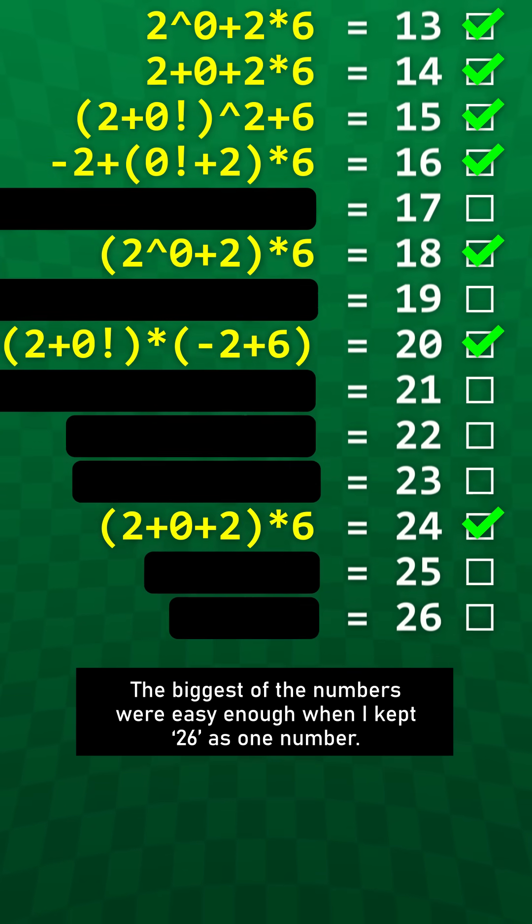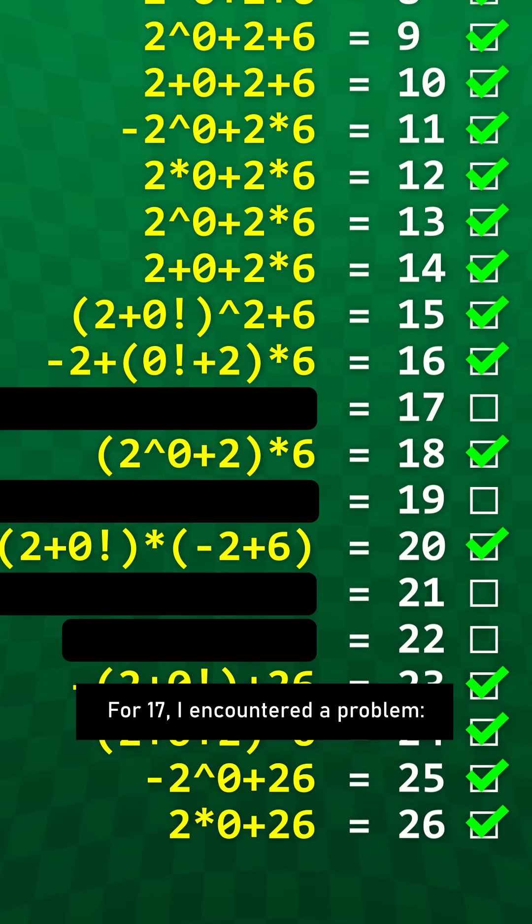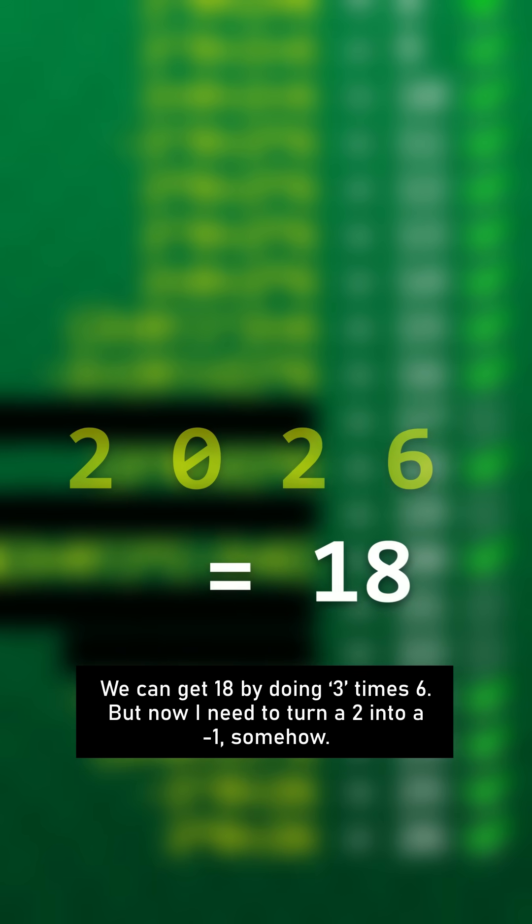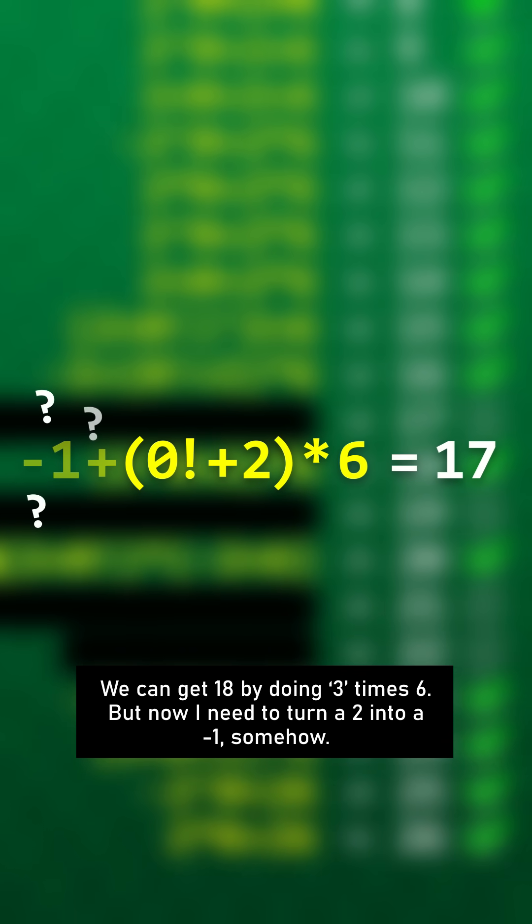The biggest of the numbers were easy enough when I kept 26 as one number. For 17, I encountered a problem. We can get 18 by doing 3 times 6, but now I need to turn a 2 into a negative 1 somehow.